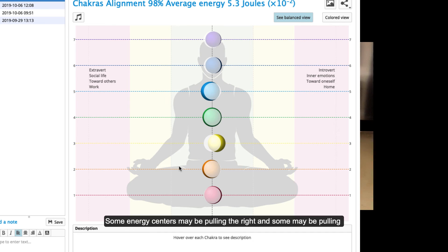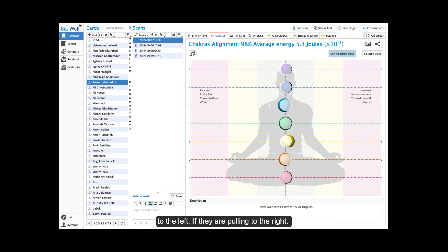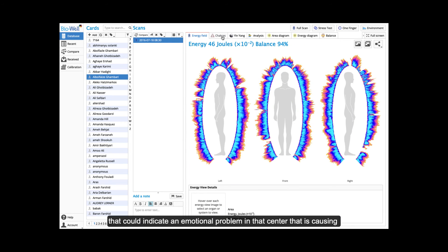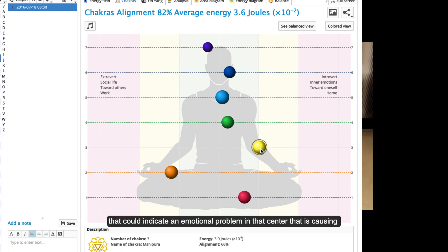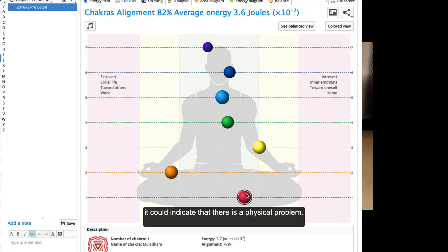Some energy centers may be pulling to the right and some may be pulling to the left. If they are pulling to the right that could indicate an emotional problem in that center that is causing the imbalance. If the center is pulled to the left it could indicate that there is a physical problem.